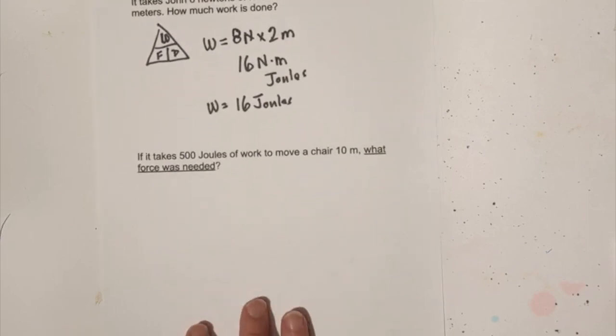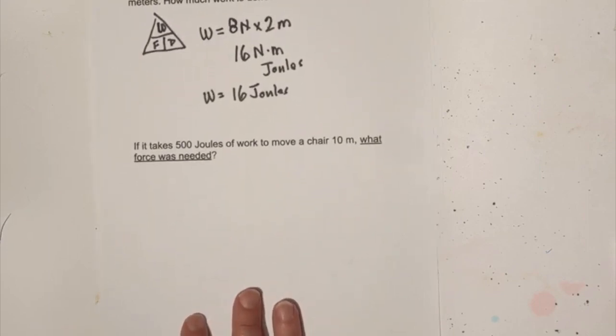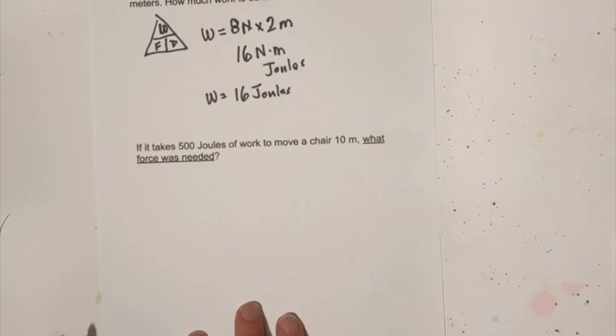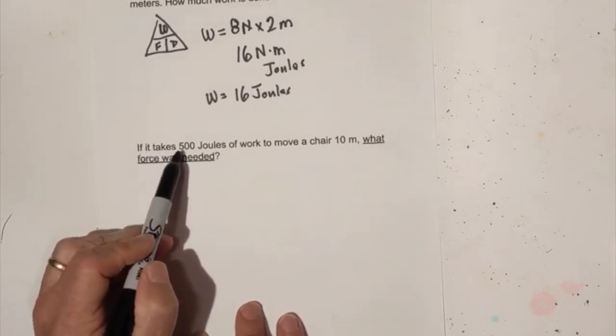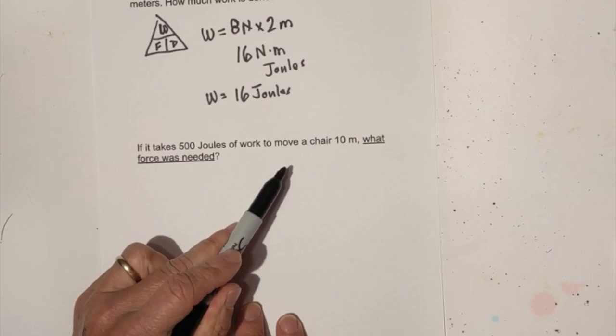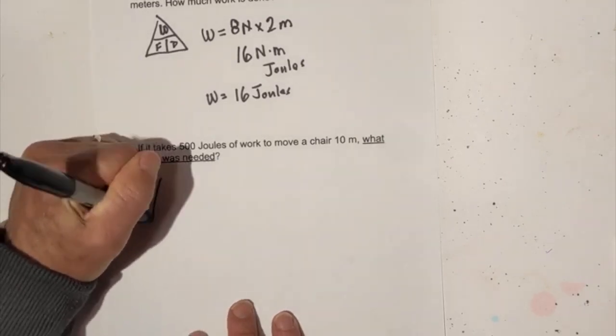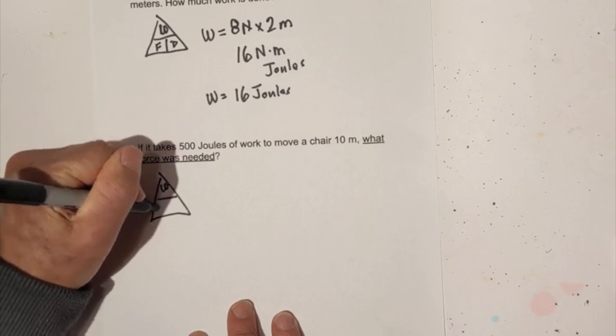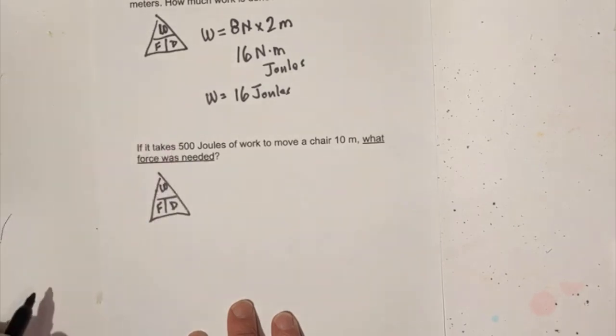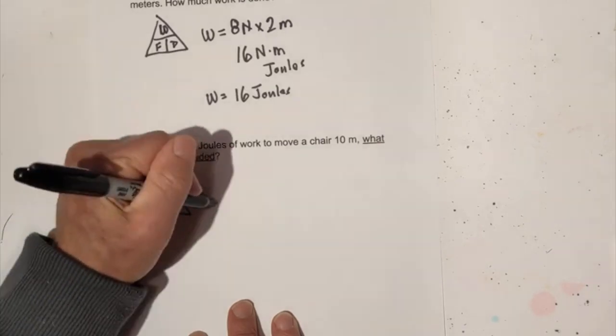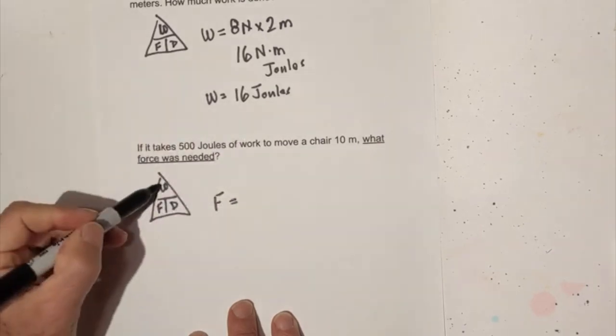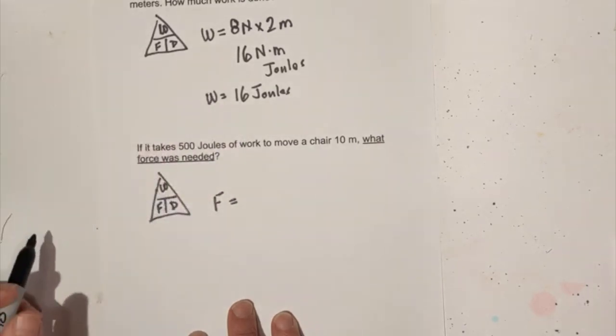Now we're going to look at one that is slightly different. In this one it says if it takes 500 joules of work to move a chair 10 meters what force was needed? We have a triangle we have work, force, distance. We're looking for force and it is work divided by distance.